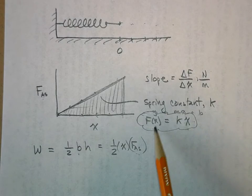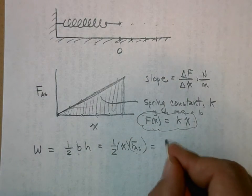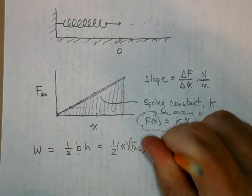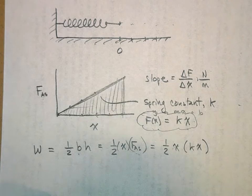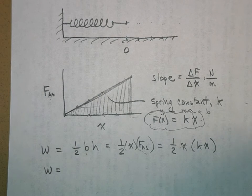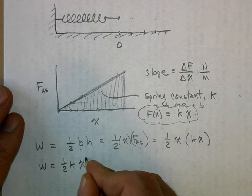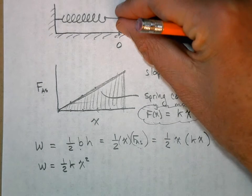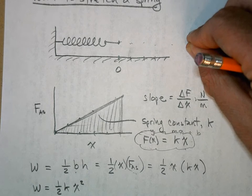So we can substitute that in here. This is equal to one-half x times kx. Well, this gives me a really cool little equation - the work done, the work that I had to do to stretch a spring is equal to one-half k x squared. Now this is how much work I have to do - some outside agent. I have to come up here and pull that spring out. That took work.